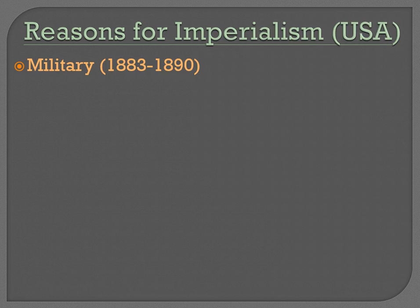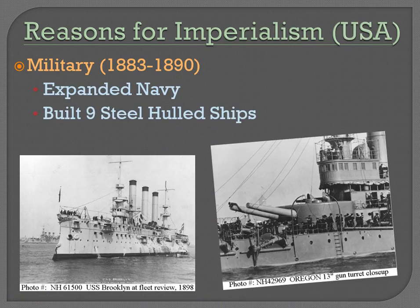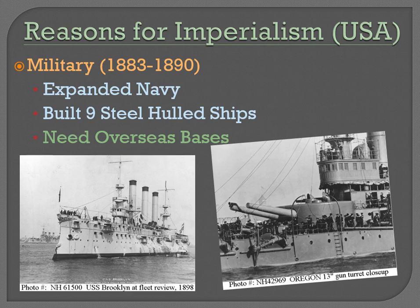From a military standpoint, from 1883 to 1890, the United States was in the process of expanding our military. We're building these huge ships — which the Germans called dreadnoughts, we call them battleship class ships — essentially ginormous steel-hulled ships. In the late 1800s, a lot of early ships were still being made out of wood, and now we're starting to use steel. We also need overseas bases because these ships use up an incredible amount of fuel, so we need refueling ports all across the world — and in order to get those ports, we need to imperialize.